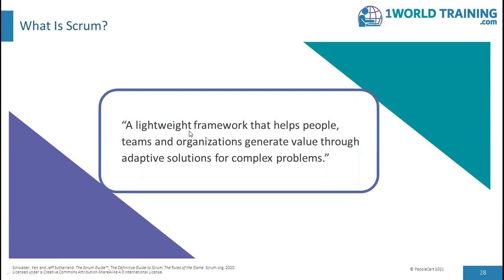The Scrum framework is purposefully incomplete because it only defines the parts required to implement Scrum Theory. Scrum is built upon by the collective intelligence of the people using it. Rather than provide people with detailed instructions, the rules of the Scrum guide their relationships and interactions. Various processes, techniques and methods can be employed within the framework. Scrum wraps around existing practices or renders them unnecessary, and makes visible the relative efficacy of current management, environment and work techniques so that improvements can be made.